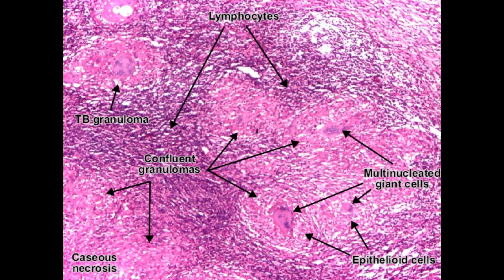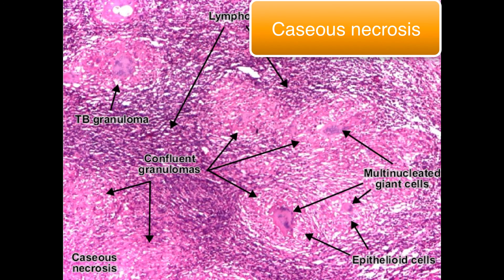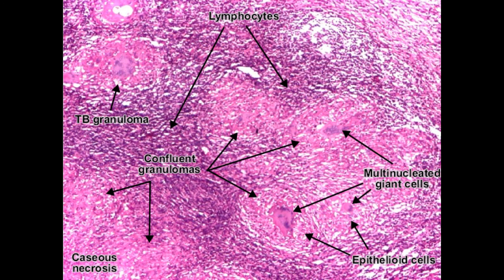Eventually, as macrophages release oxygen-derived free radicals and proteolytic enzymes, they destroy the Th1-associated granuloma and the bacillus itself, but they also damage a lot of surrounding tissue. This damage causes the tissue to become ischemic and eventually necrotic. This type of necrosis is called caseous necrosis. Granuloma is not always associated with caseous necrosis, as granulomas can be either caseating or non-caseating, which will be discussed in another video.